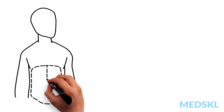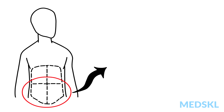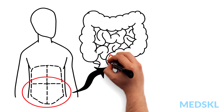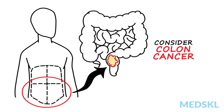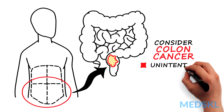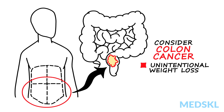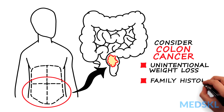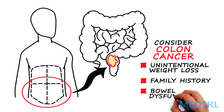Masses in the right and left lower quadrants can indicate colon cancer. Consider this in patients who also complain of unintentional weight loss, have a family history of colon cancer, or who have bowel dysfunction.